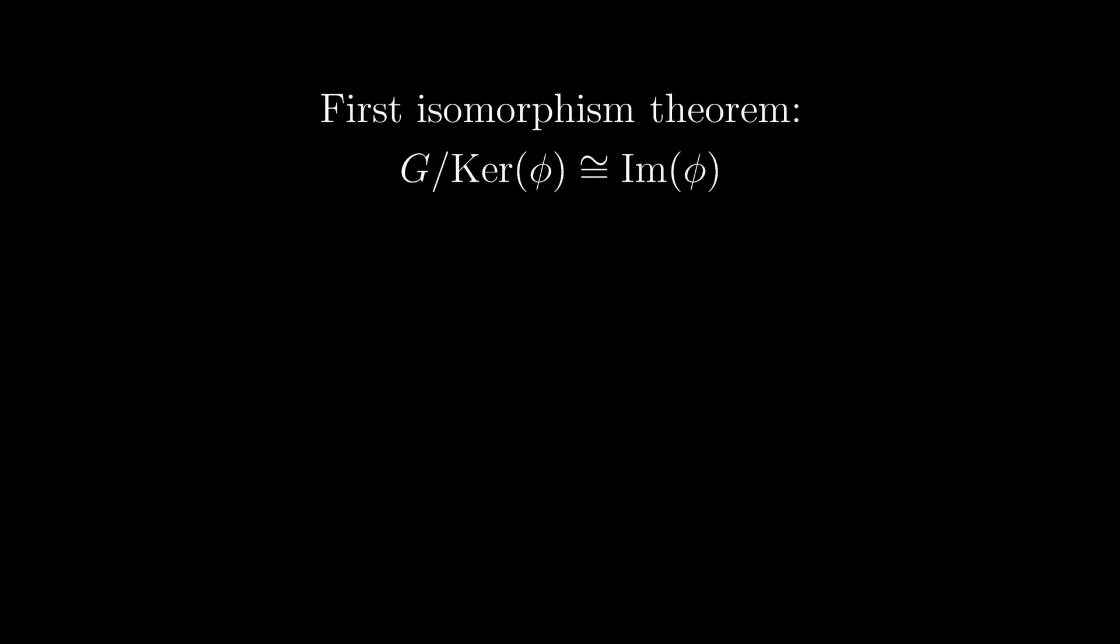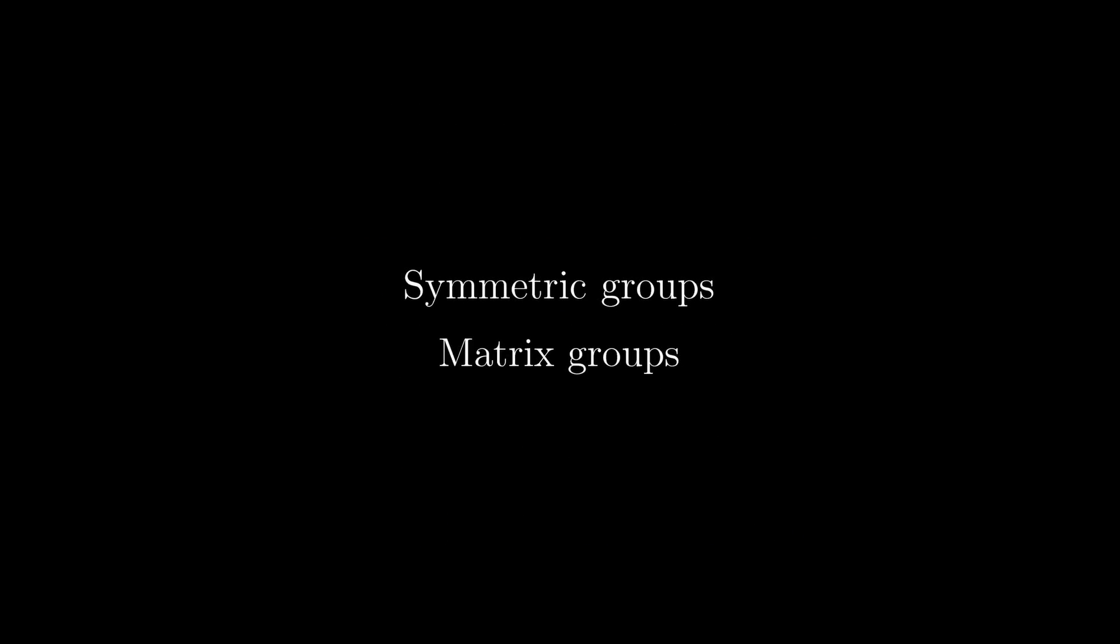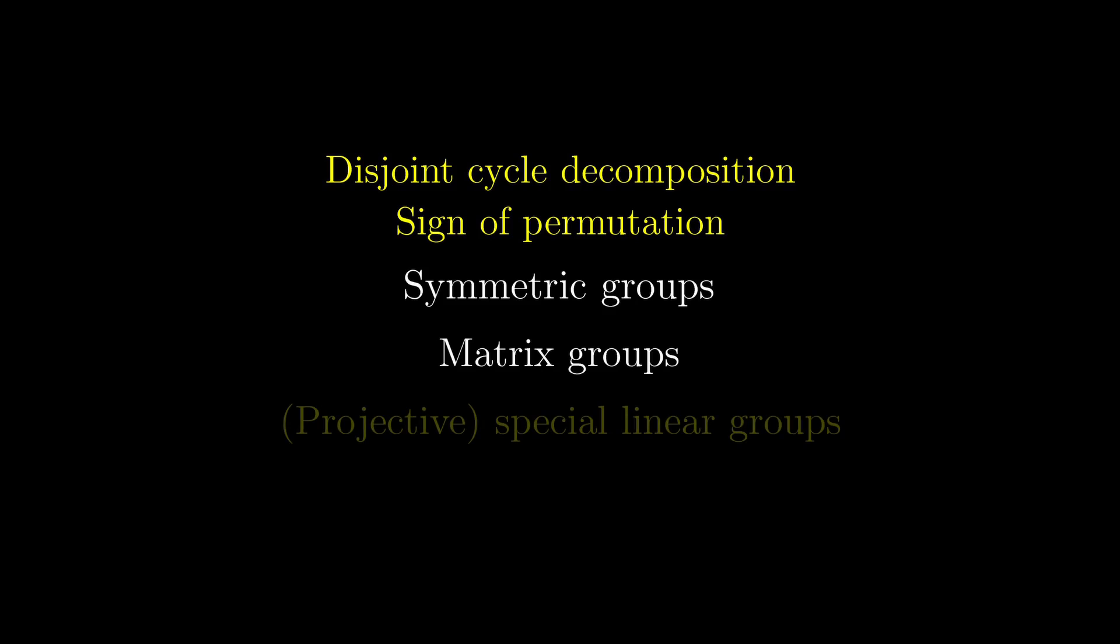This is sometimes also called the first isomorphism theorem, because there are second and third isomorphism theorems. However, all these theorems can be derived from the first one, using clever choices of the homomorphism phi. Now in a normal course on group theory, you might spend a great deal of time on symmetric and matrix groups. But I will not cover those topics because most concepts will be specific to those types of groups, and not applicable in general.